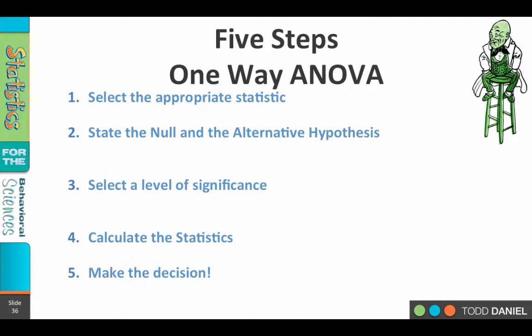We're going to use the same five steps for hypothesis testing we've been using in every other example, starting with number one, select the appropriate statistic. So what kind of test can we use to compare the means of four independent groups? The answer is the one-way ANOVA.